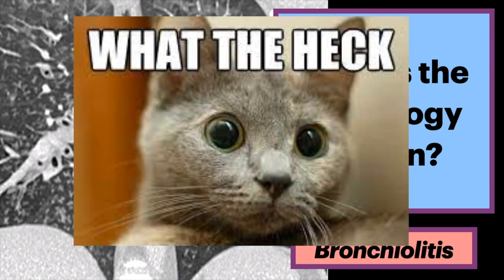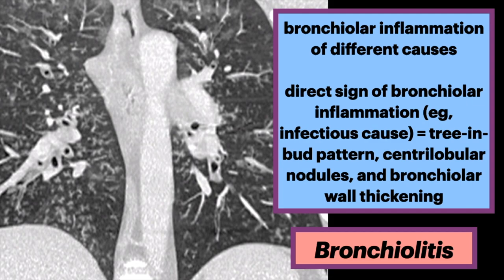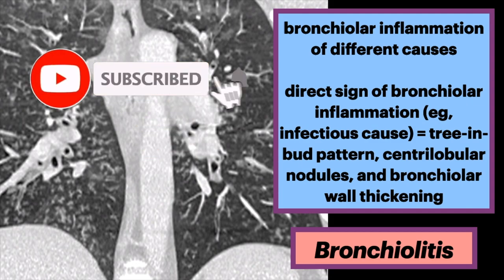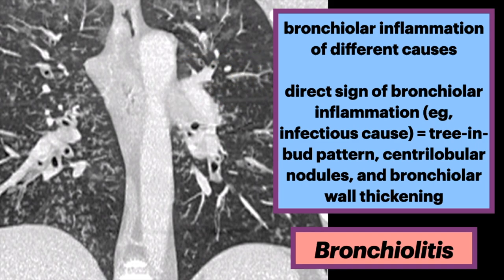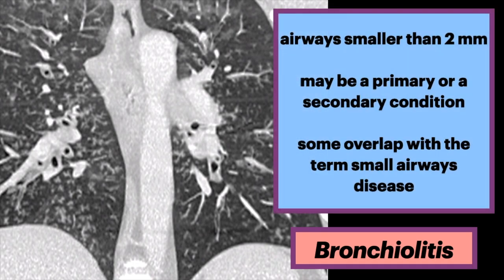What is bronchiolitis? Bronchiolitis is inflammation of the bronchioles of various causes. The direct sign of bronchiolar inflammation, such as from an infectious cause, is often seen as a tree and bud pattern, centrolobular nodules, and bronchiolar wall thickening on CT scans. It is often used in situations where the inflammation primarily occurs in airways smaller than 2 mm.